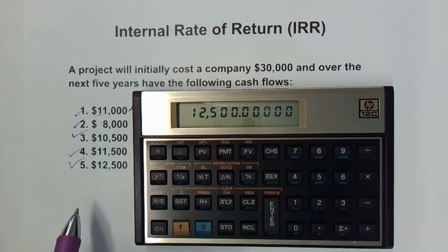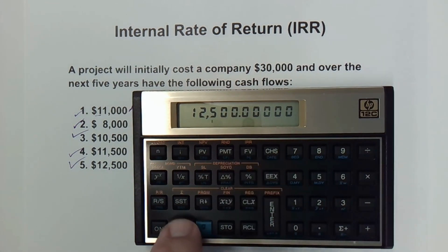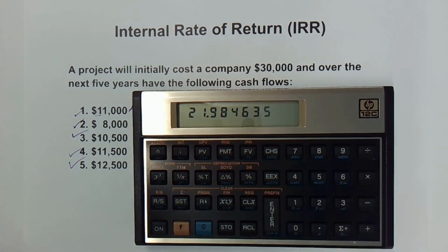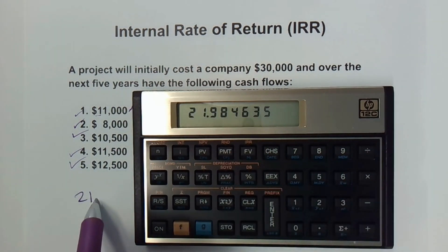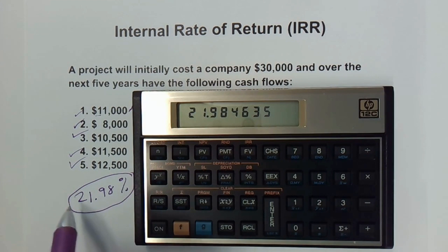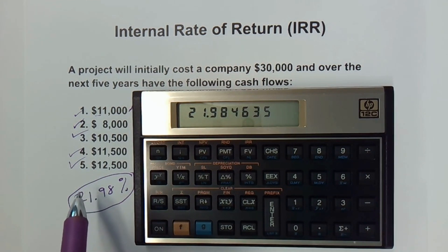Now it's time to find out the internal rate of return. That button is right here above the future value — it's IRR. So I hit the orange F button and then hit IRR. And it quickly comes back with 21.98 — we can round it to 22%. That is the IRR, the internal rate of return for this investment. At this discount rate, our net present value would be zero.